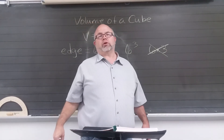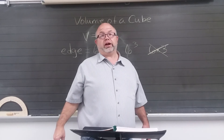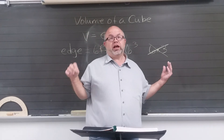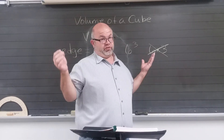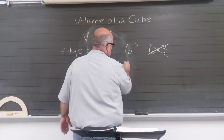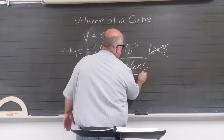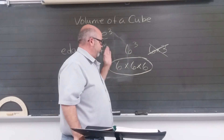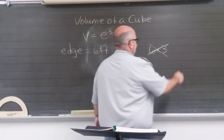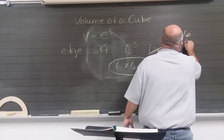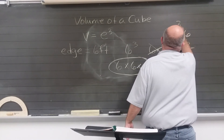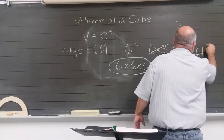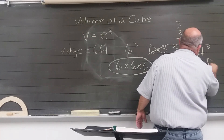The only time multiplying by the exponent works is 2 squared, because 2 times 2 happens to equal 4. But 5 squared: 5 times 2 is 10, while 5 times 5 is 25. So 6 cubed is 6 times 6 times 6. Six times six is 36, and 36 times 6 is 216 — so the volume is 216 cubic feet.